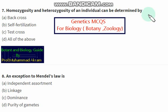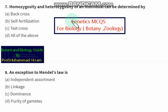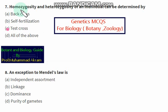Homozygosity and heterozygosity of an individual can be determined by back cross, self-fertilization, or test cross. The right option is option C, test cross. By the help of test cross we can determine the homozygosity and heterozygosity of an individual.